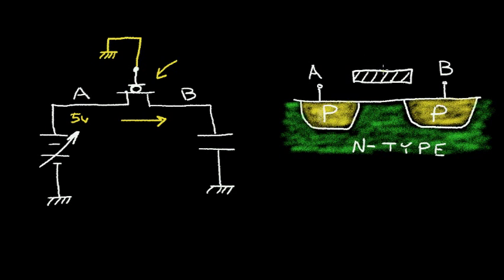Let's look at what's happening in the channel region. This gate is grounded and point A is at 5 volts. That causes a strong electric field in this direction that attracts the holes to the surface and forms the conducting channel between point A and point B. So this PMOS transistor does a good job of transferring high voltage from point A to point B.